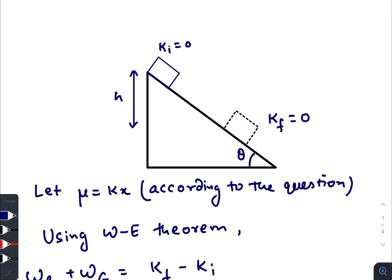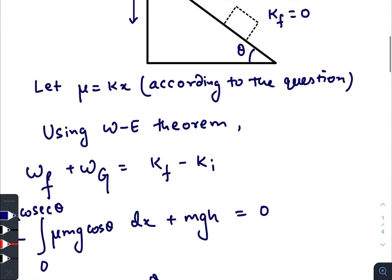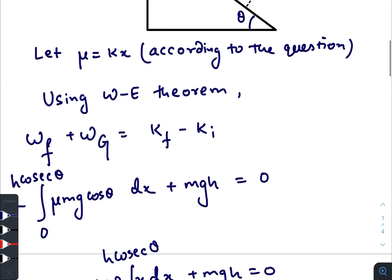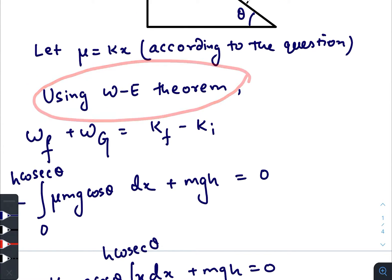And at that situation, the net force at maximum speed, net force becomes zero. So let us consider that the coefficient of friction μ is equal to kx where k is some positive constant. Using work energy theorem so that we can find an expression for h here.